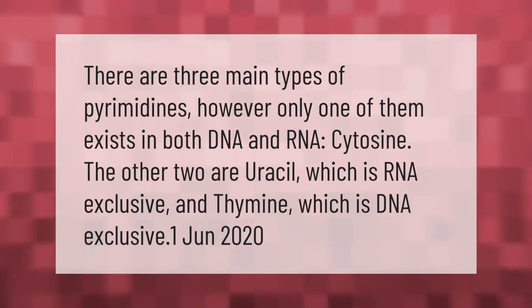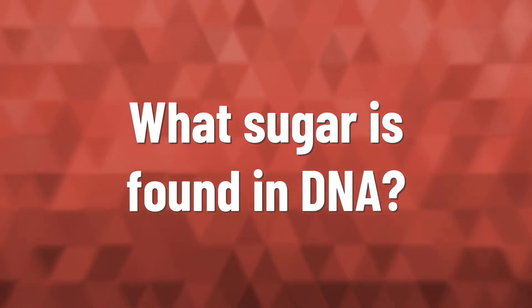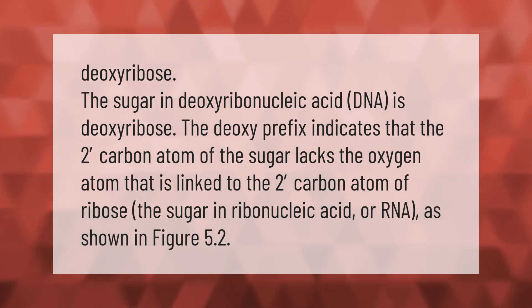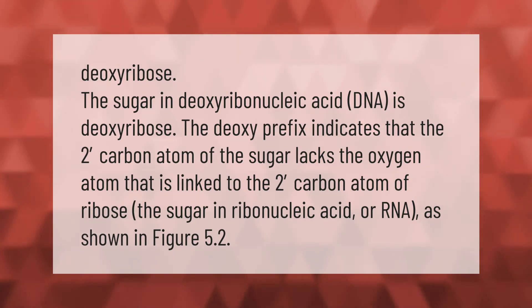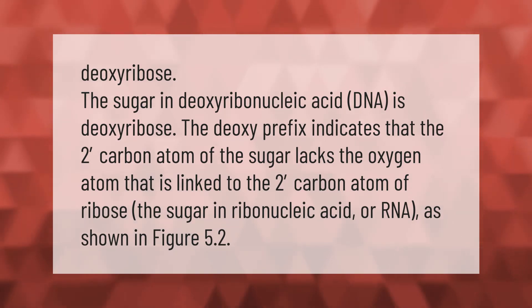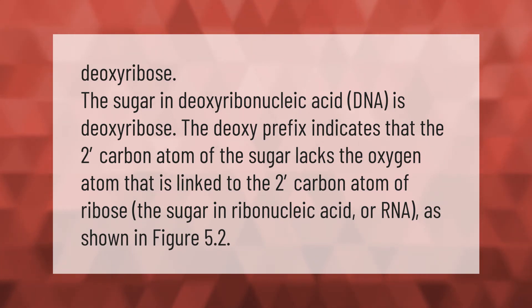The sugar in deoxyribonucleic acid (DNA) is deoxyribose. The 'deoxy' prefix indicates that the 2' carbon atom of the sugar lacks the oxygen atom that is linked to the 2' carbon atom of ribose, the sugar found in ribonucleic acid (RNA), as shown in figure 5.2.